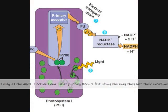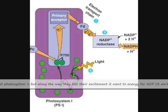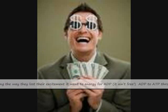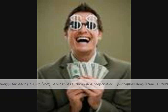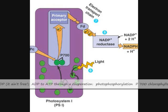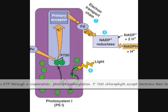Electrons end up at Photosystem I, but along the way they lost their excitement, and went to energy for ADP. It ain't free! ADP to ATP — photophosphorylation.